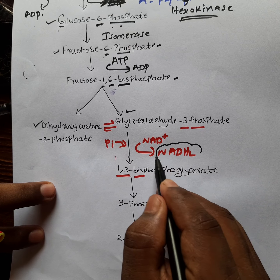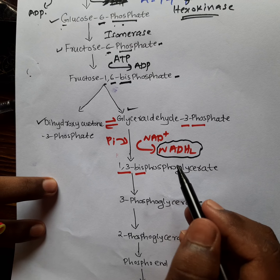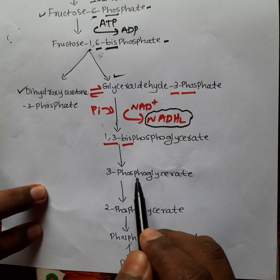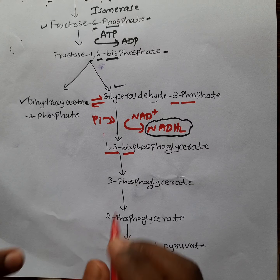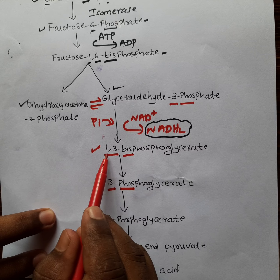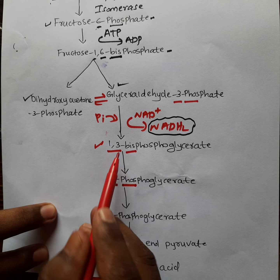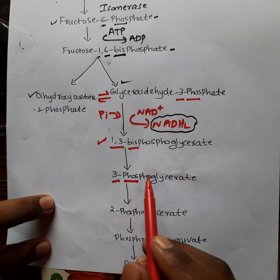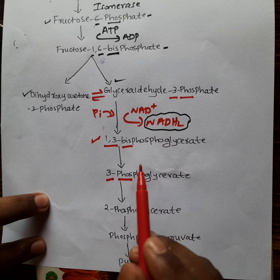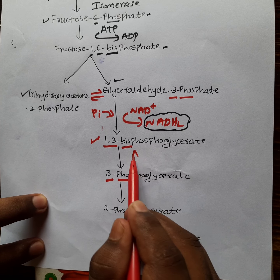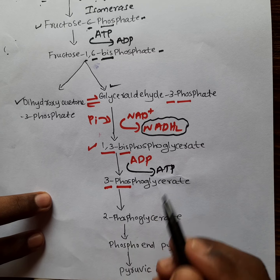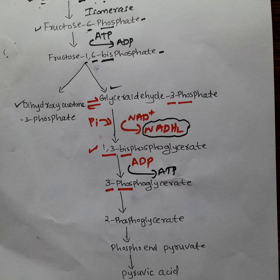During the conversion of G3P to 1,3-bisphosphoglycerate, the extra phosphate is added from inorganic phosphate — not from ATP. At this point, an NAD⁺ molecule converts into NADH₂. Then, 1,3-bisphosphoglycerate converts into 3-phosphoglycerate: a phosphate group is released, accepted by ADP, converting it into ATP.